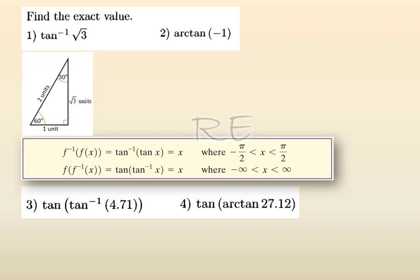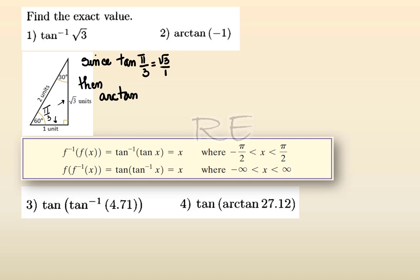Find the exact value of inverse tangent of √3. We're looking for the arc whose tangent is √3. From the 1-2-√3 reference triangle, π/3 is the arc whose tangent is √3/1, therefore √3, and π/3 is in the first quadrant. Therefore, the arc whose tangent equals √3 is π/3. Note that π/3 is strictly between negative π/2 and π/2, so this is the correct answer.